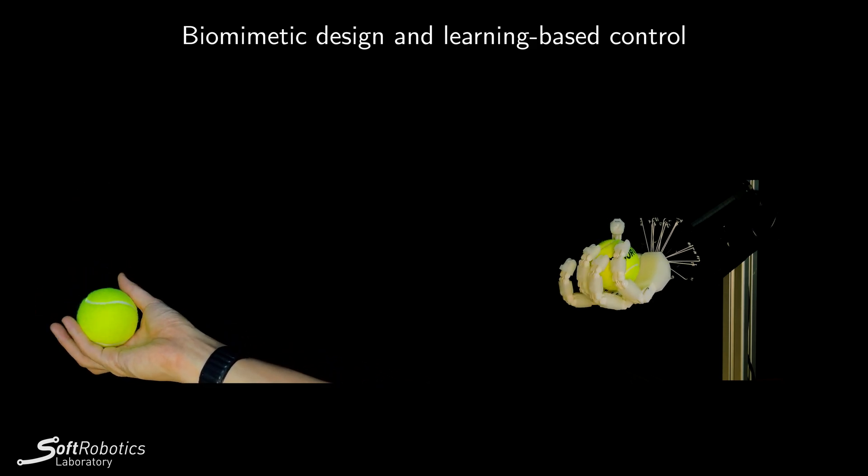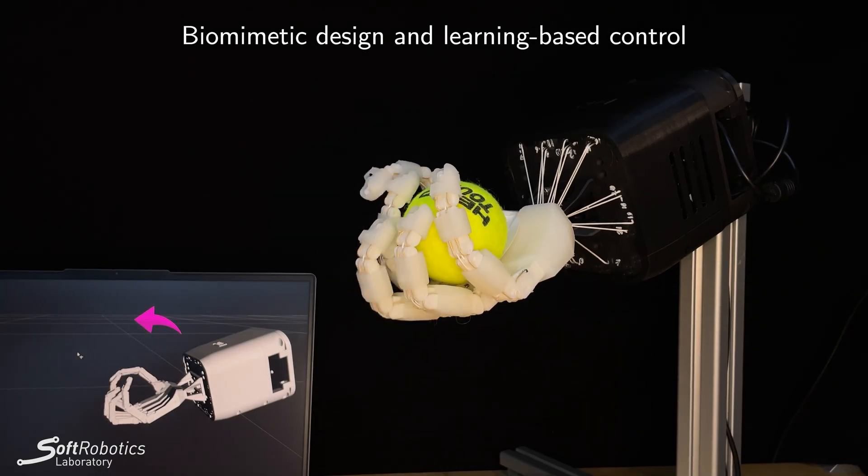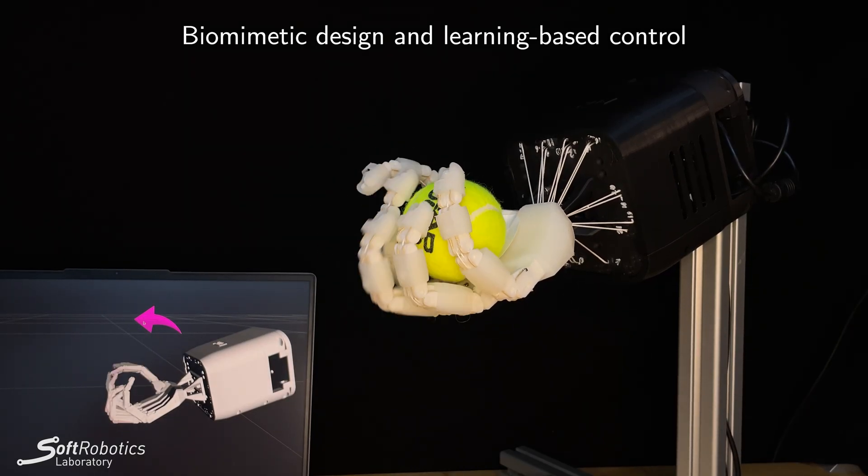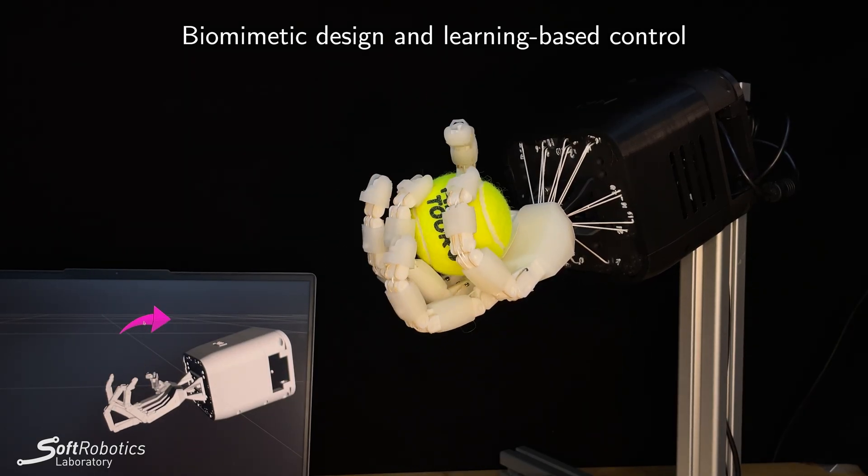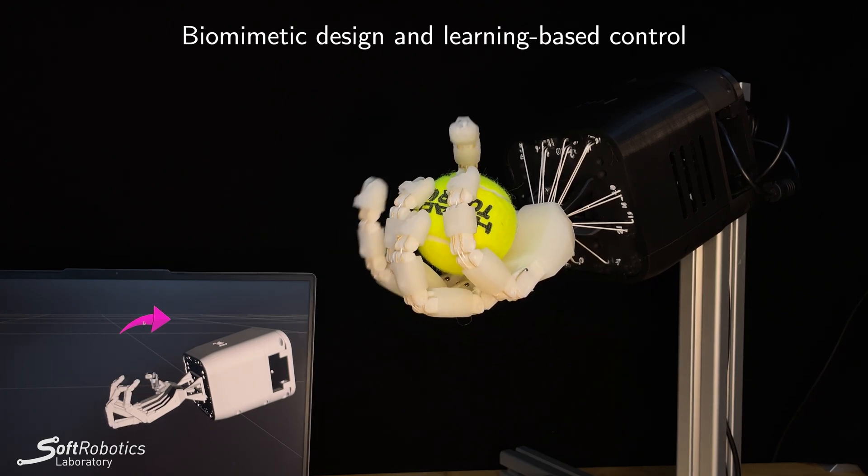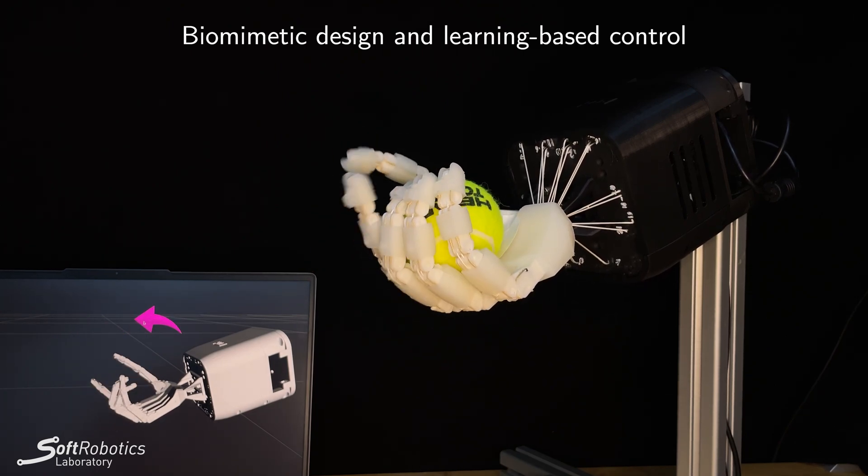As our robots get more complex and human-like, we also need to control them to produce human-like behavior. Recent advances in parallelized simulation and reinforcement learning let us train dexterous policies for these biomimetic robots.